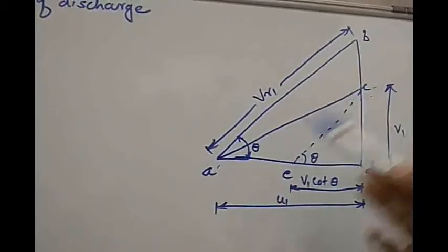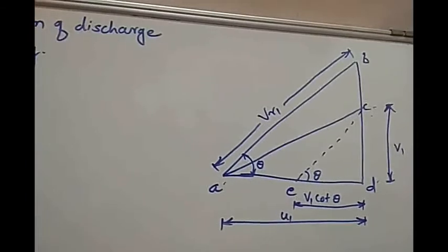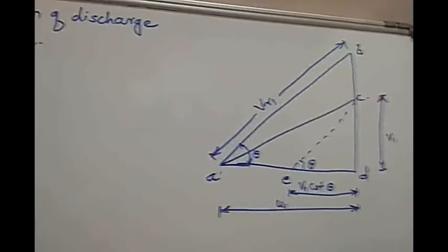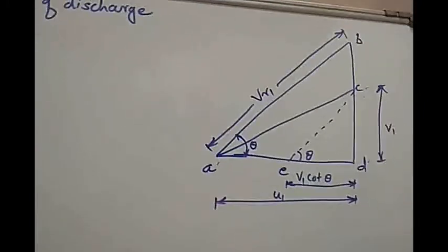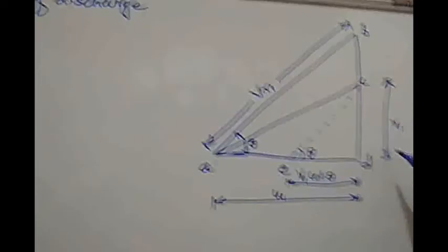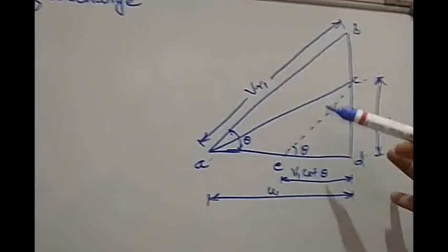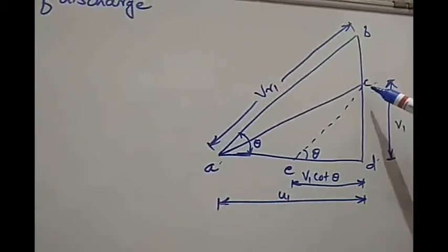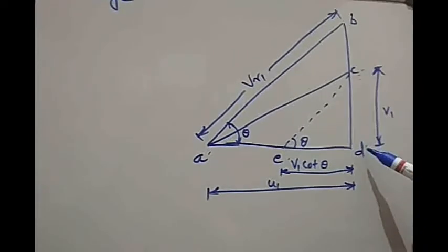AC will be the new relative velocity. However, the vane has a fixed inlet tip angle, and AC has changed its angle. So there will be entry with shock, causing loss of head. The new velocity of flow is CD (i.e., Vf1), which is fixed, and the vane angle is also fixed. So the relative velocity will flow along EC, which is parallel to AB, and the new velocity triangle will be ECD.